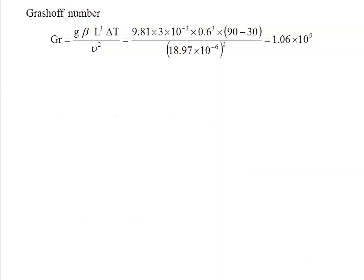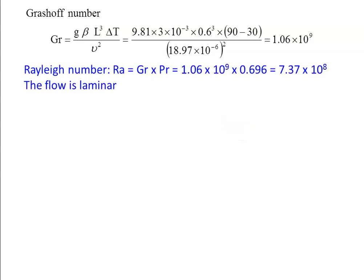Calculating the Grashof number for a flat plate: Gr = g·β·L³·ΔT / ν². Substituting values: 9.81 × 3×10⁻³ × 0.6³ × (90−30) / (18.97×10⁻⁶)² = 1.06×10⁹. Rayleigh number Ra = Gr × Pr = 1.06×10⁹ × 0.696 = 7.37×10⁸. Since GrPr < 10⁹, the flow is laminar.